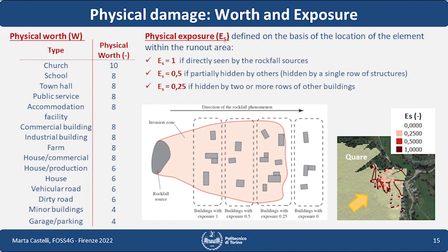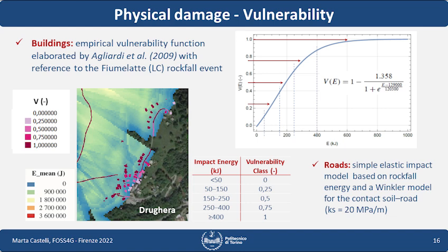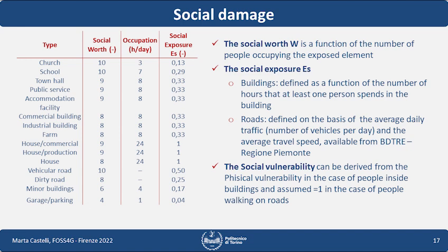This was done through very simple considerations. For the physical value, for example, we used an index classification from 1 to 10. For the exposure, we made considerations related to the position of each element with reference to the rockfall source. For vulnerability, we identified a classification with reference to the impact kinetic energy of the block against the element, based on literature data, as shown here. Similar considerations were made for roads.